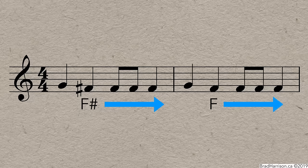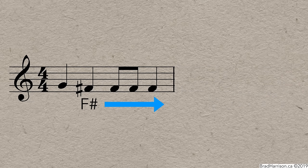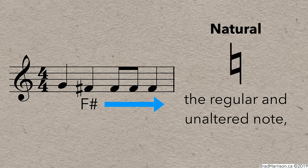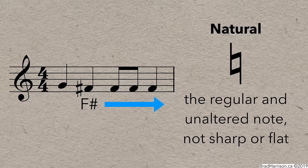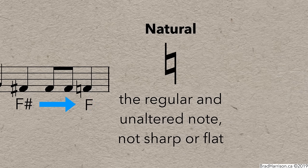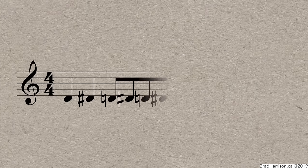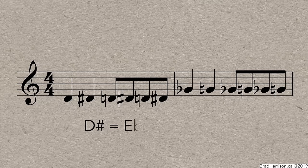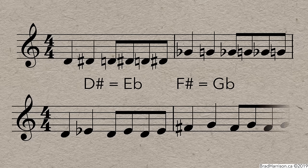If you did want to have a sharp note followed by a regular note in the same bar, we use a third type of accidental called the natural. It looks like this, and it refers to the regular and unaltered note, not sharp or flat. So you might see something like this. If you wanted to switch back and forth between a sharp or flat note and its natural, it could get a little cluttered and difficult to read. But if you'll remember that some notes have two names, like D sharp and E flat, as well as F sharp and G flat, you can rewrite these bars like this, which is a lot easier to read, but still sounds the same.